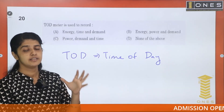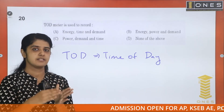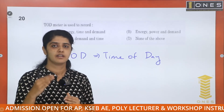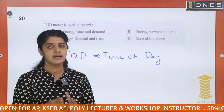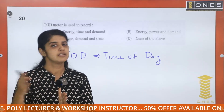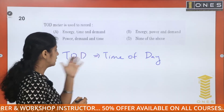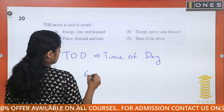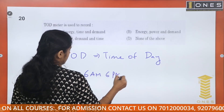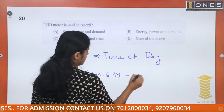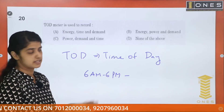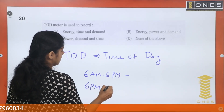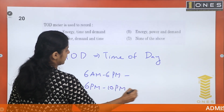TOD meters are used in industrial substations for industrial loads, charging per unit based on time of day. There are 3 time slots: 6 am to 6 pm is the daytime slot at normal rate, and 6 pm to 10 pm is the peak time slot.